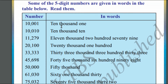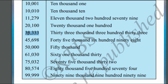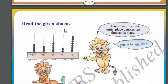Now let us convert from numbers to word form. Here we can see numbers: 1001, 33,333, 50,000, and 99,999. Now let us read the Abacus. The Abacus is an ancient Chinese method for doing simple arithmetic — there is a separate device or instrument to perform simple arithmetic.